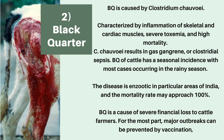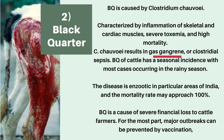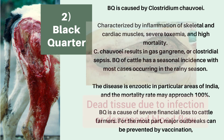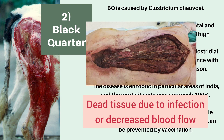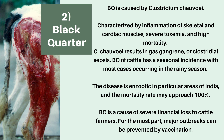Now let's talk about our second bacterial disease — blackwater. Blackwater is caused by Clostridium chauvoei and is characterized by inflammation of skeletal and cardiac muscles, severe toxemia, and high mortality. Toxemia is defined as blood poisoning through toxins due to local bacterial infection. Clostridium chauvoei results in gas gangrene or Clostridial myositis — gangrene being dead tissue due to infection or decreased blood flow, and since this is gas gangrene, it is accompanied by a foul-smelling gas.